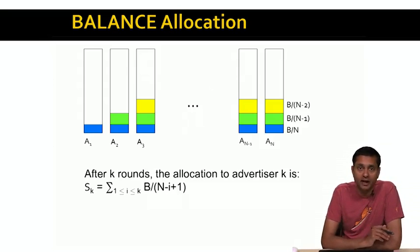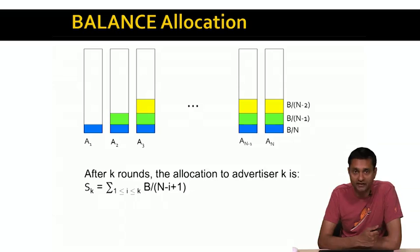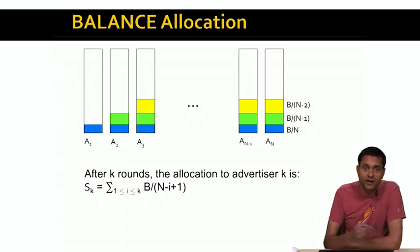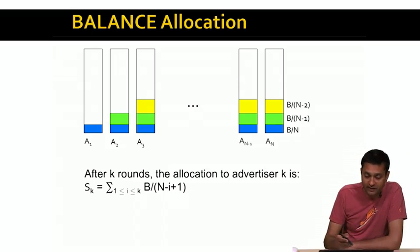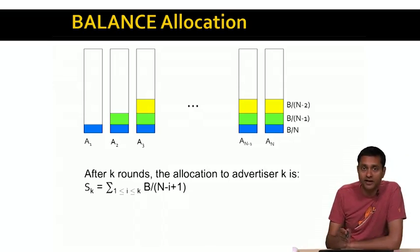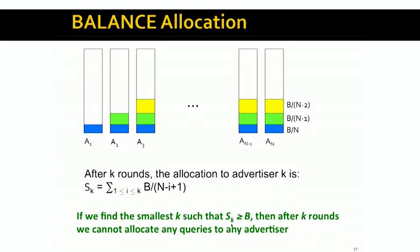This process continues until the sum S_K exhausts the budget of the Kth advertiser. At some point S_K is going to exceed B, which is the total budget available to the Kth advertiser. At that point, we've exhausted the budget of not just the Kth advertiser, but also all advertisers K+1, K+2 through N, because all those advertisers have the same allocations. So if we can find the smallest K such that S_K is greater than or equal to B, then after K rounds we've exhausted the budgets of all advertisers K through N, and we cannot assign any queries beyond that point.